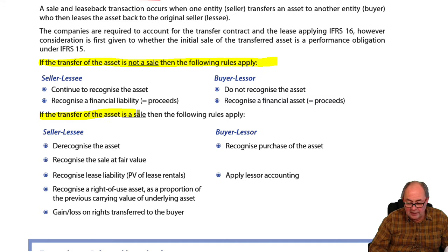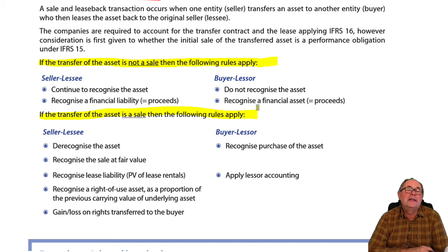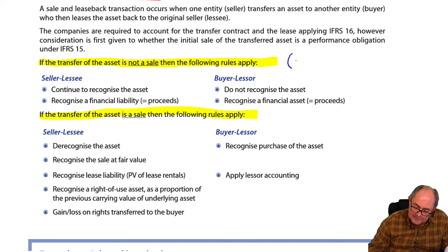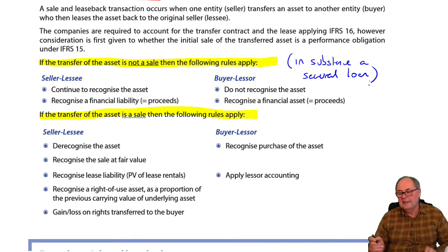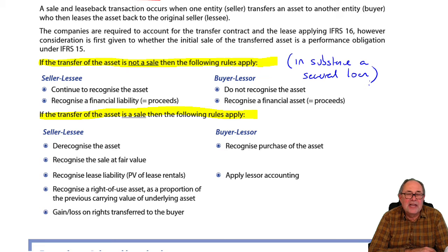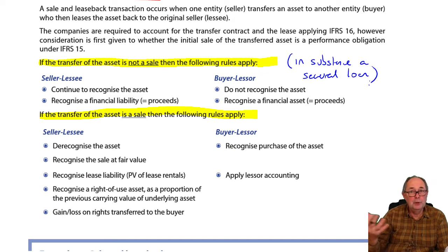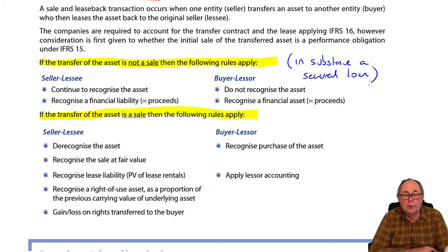If there wasn't a sale — which is the first scenario — what you've really got is a secured loan. This is the case, for example, when you sell an asset with a life of 40 years and then rent it back for 40 years. You actually retain the risks and rewards of ownership. It's not really a lease — it's simply a loan secured on that asset.